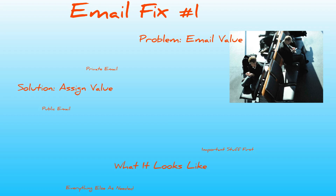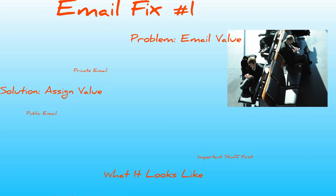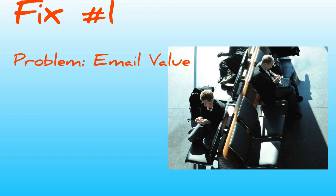Hey, it's Paul Colligan, and it's Make It Happen Monday. It's email fix number one today. The problem: email value. You know how it is — you get a lot of email. We all get a lot of email. The problem is, it's not all as important as it sometimes says it is, and it's not always as necessary as it sometimes says it is. Even more distressingly, sometimes the important stuff gets mixed into the non-important stuff. We miss the things that we don't want to miss, and we spend too much time and attention on the stuff that just doesn't matter.